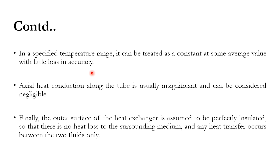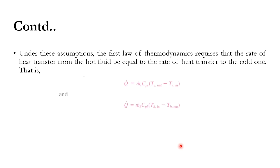Axial heat conduction along the tube is usually insignificant and can be considered negligible. The outer surface of the heat exchanger is considered insulated, meaning there is no heat loss to the surrounding medium — heat transfer occurs only between the two fluids. Therefore, the heat lost by the hot stream equals the heat gained by the cold stream. Under these assumptions, by the first law of thermodynamics, Q equals m·Cp·ΔT.